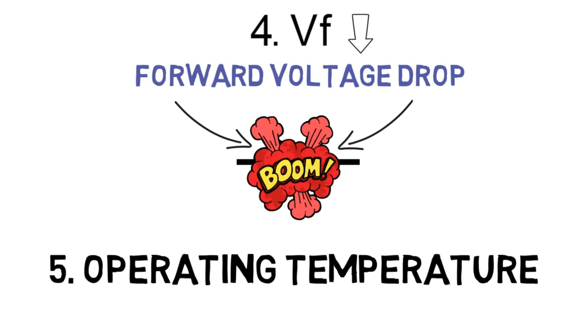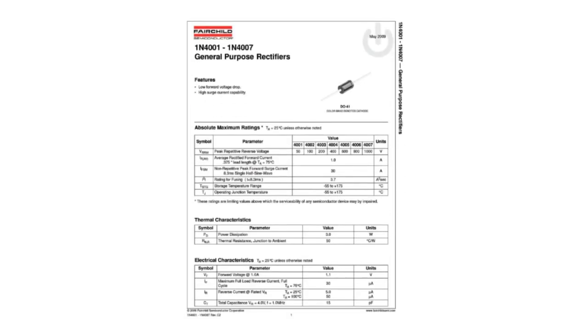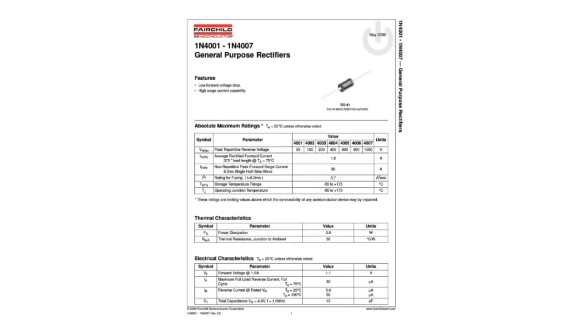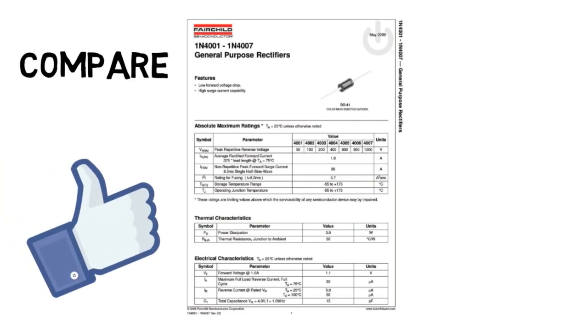These are the necessary parameters needed to select a rectifier diode. All these details are available in the data sheet of the diode which you'll select. You have to compare the calculated values with actual ones, and your diode is ready for rectification. I'll upload more videos regarding the selection of diodes for other applications as well.